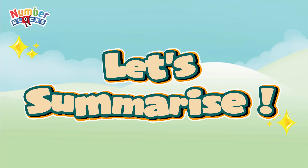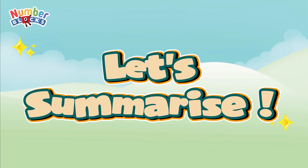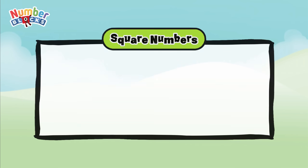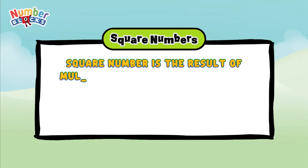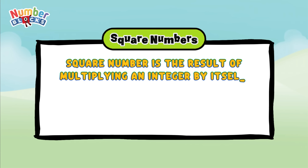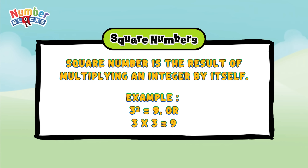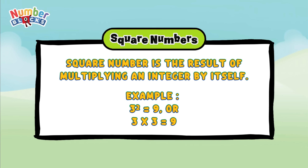Now, join me and let's summarize. A square number is the result of multiplying an integer by itself. For example, 3 squared is equals to 9, or 3 times 3 is equals to 9.